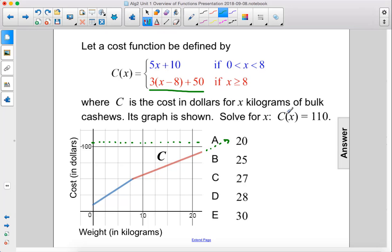So we should solve this one for 110, for x. So 3 times (x minus 8) plus 50 equals 110.